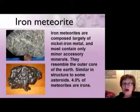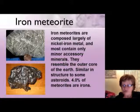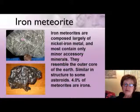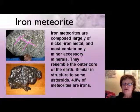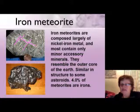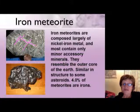Iron meteorites are composed largely of iron and nickel, very similar to the Earth's core. The dark areas are iron and the white lines are nickel. They include very minor other minerals and are essentially exactly the same in composition as the Earth's core, also structurally similar to some asteroids. About 4 percent of all meteorites are iron meteorites.